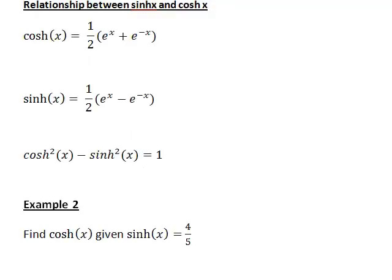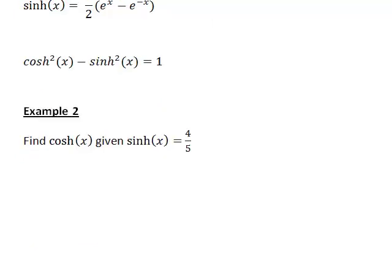Let's look at a second example: finding cosh(x) if we know that sinh(x) is 4 fifths. Once again, we'll start with our identity.